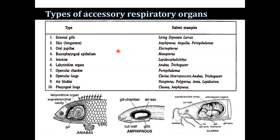The accessory respiratory organs of fishes include: external gills found in Dipnoi larvae; integument found in Amphibnous cuchia, Anguilla, and Periophthalmus; oral papillae found in Electrophorus; buccopharyngeal epithelium found in Monopterus; intestine present in Lepidocephalichtys and Gantia; labyrinthine organ found in Anabas testudineus and Trichogaster; opercular chamber found in Periophthalmus; opercular lung found in Clarias batrachus, Heteropneustes fossilis, Anabas testudineus, and Trichogaster. Air bladder also serves as an accessory respiratory organ in Notopterus, Polypterus, Amia, and Lepidosiren, and pharyngeal lung found in Channa and Amphibnous.